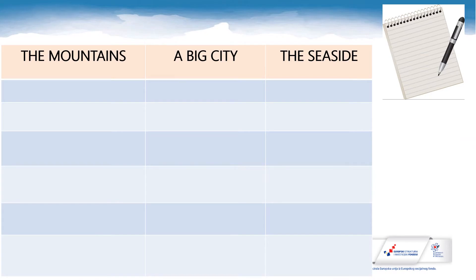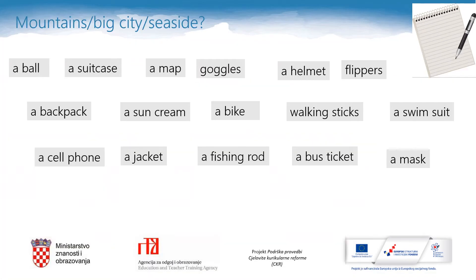And now copy this table in your notebooks, please. The mountains. A big city. The seaside. Now please sort out these words in your table — place each item in the column where you think you would take it. For some items you may decide to take them to two or even three places. So pause the video please and fill in your tables.